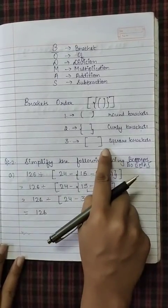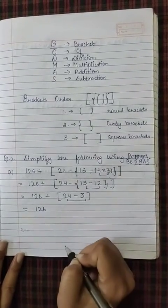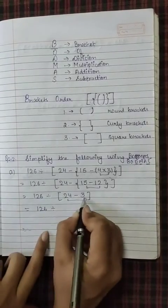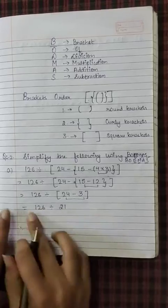Last, we solve square bracket. Now only square bracket is left. We have to solve this. We have the divide sign. So 24 minus 3 is what? 21. Okay, bracket solve. Last we have to solve what? Division.